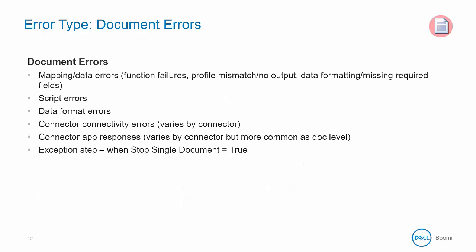Importantly, note that there is no rollback for previous steps that may have been executed. Document errors are caused by mapping and data errors — perhaps a function failure or a profile mismatch. These types of errors are common in a map and will stop that single document. There could also be script errors or data format errors within the data itself. These can also be caused by connector connectivity errors or connector app responses at a document level, and the exception step can generate these errors when the stop single document option is checked.